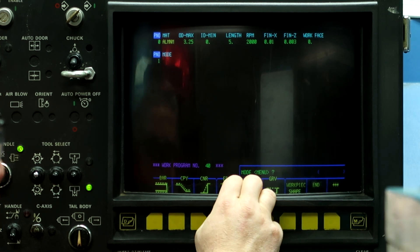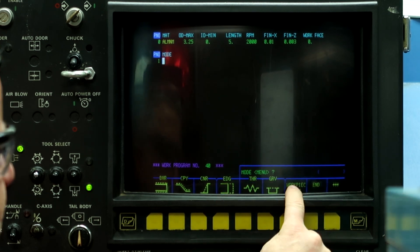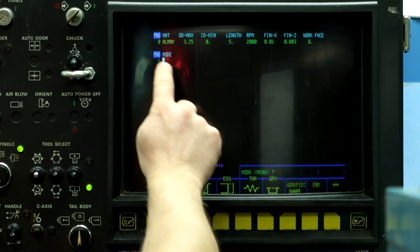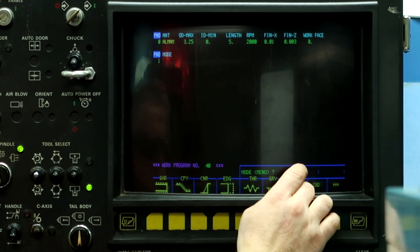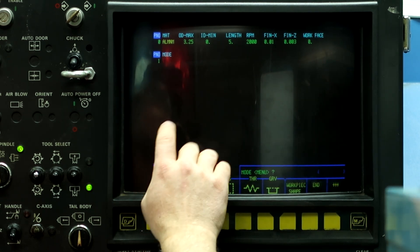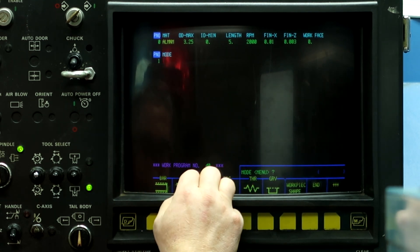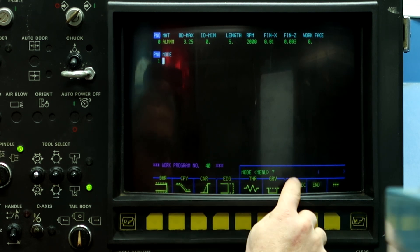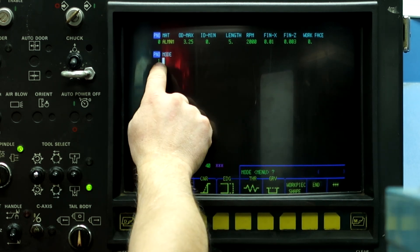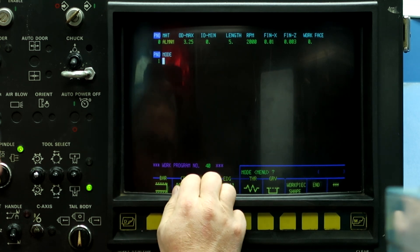So in order to describe the work piece shape, which is right here, it must be process number one. If the work piece shape is down process two, three, or four, it will not work. Work piece shape must be process number one for this to take effect.